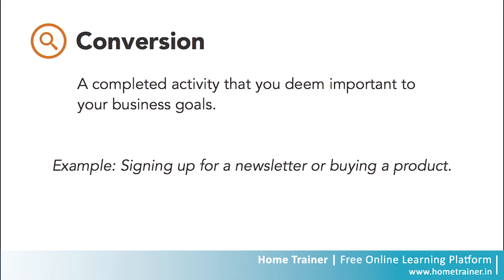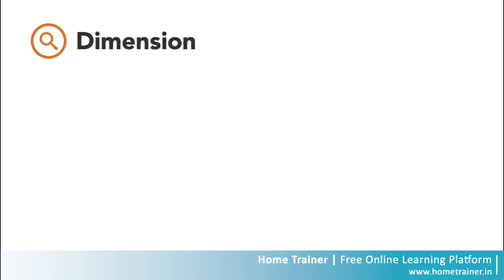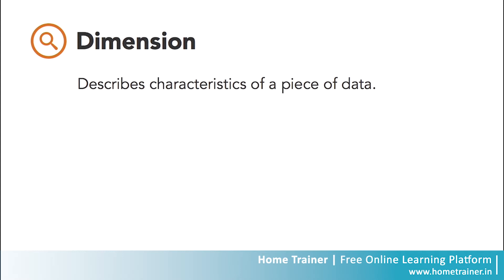As you start to interact with data in Google Analytics, you'll come across some definitions specific to how Google organizes your data. The first is dimension. This is a descriptive attribute or characteristic of data. Browser, landing page, and campaign are all examples of default dimensions in Google Analytics.